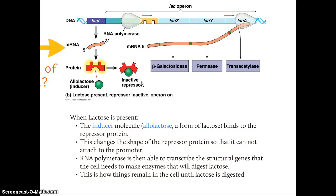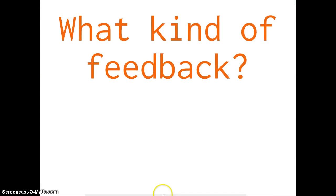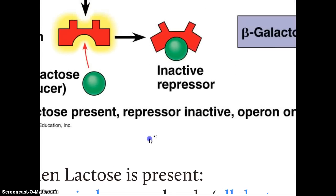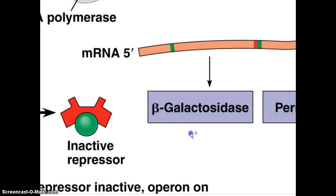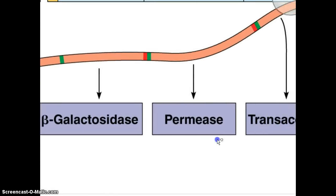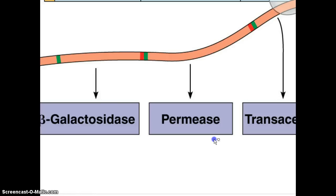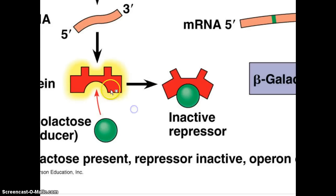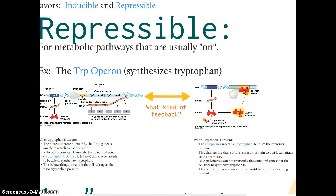This system allows bacterial cells to control enzyme production — if they don't need the enzymes, they won't produce them, saving energy and materials. This is also a form of negative feedback: the end product (lactose breakdown) creates an active repressor, which switches off its own production pathway. Negative feedback maintains homeostasis.